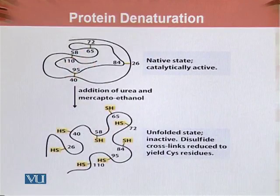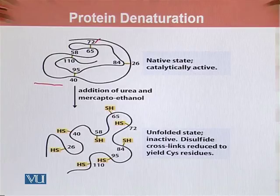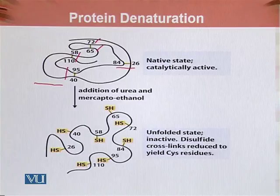This is the diagrammatic presentation of the denaturation of ribonuclease A. We can see in this structure that there are cysteine residues — specifically cysteine residues 72 and 65, 58 and 110, 95 and 40, and 84 and 26. These cysteine residues are available with disulfide linkages present within the protein.